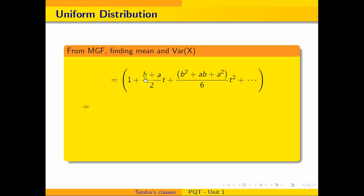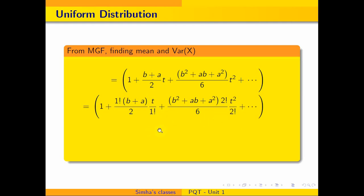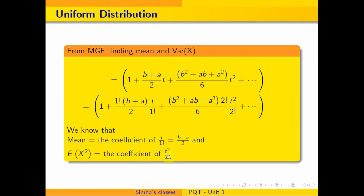Now we can extract the mean and variance from the MGF. The mean equals the coefficient of t/1! in the expanded MGF. The coefficient of t/1! gives us (b+a)/2. For the coefficient of t²/2!, we get (b²+ab+a²)/3, which equals E(x²). So the mean of the uniform distribution is (a+b)/2.